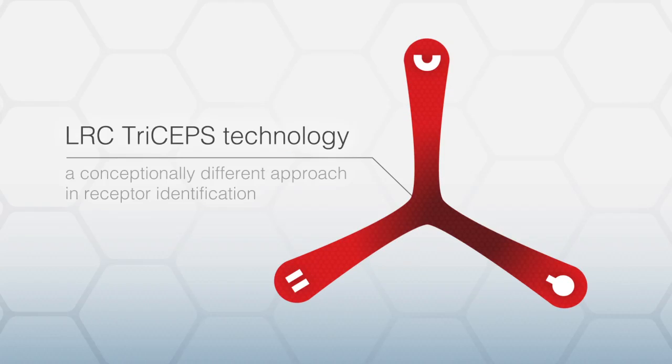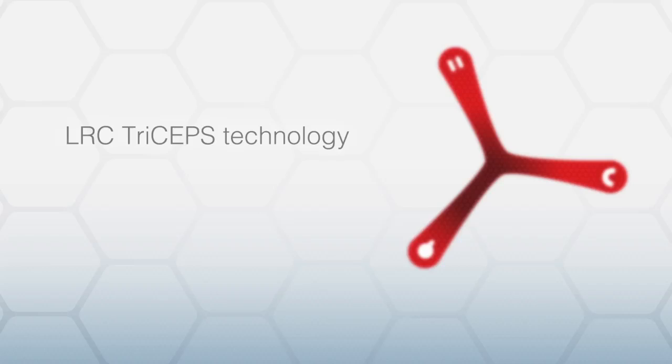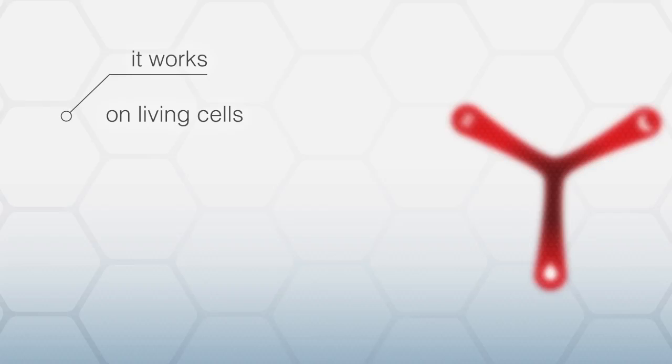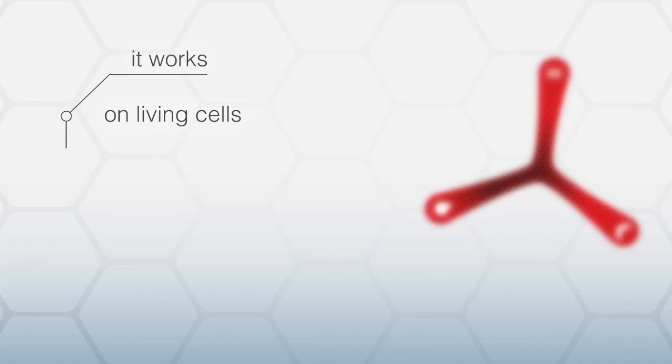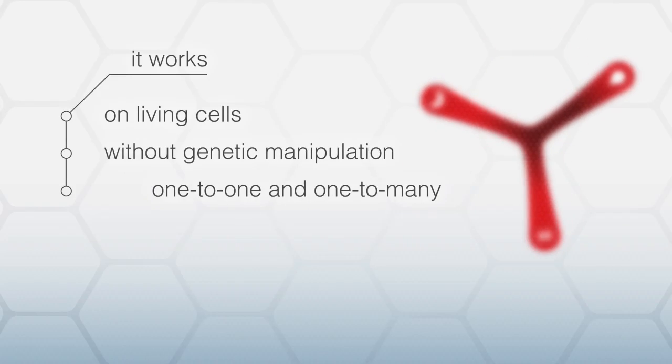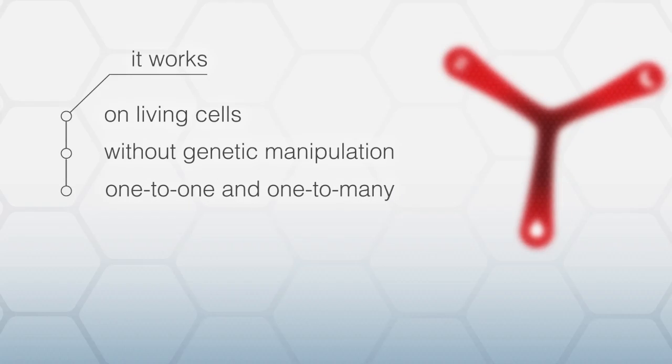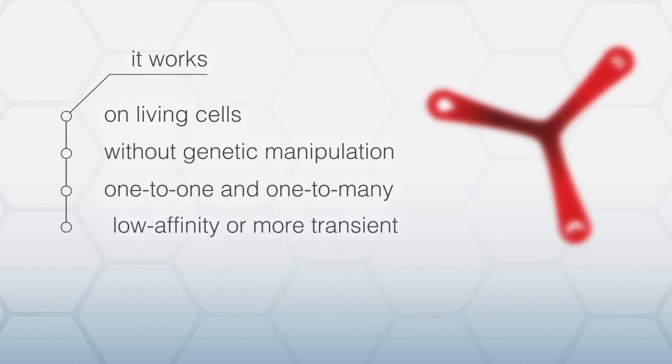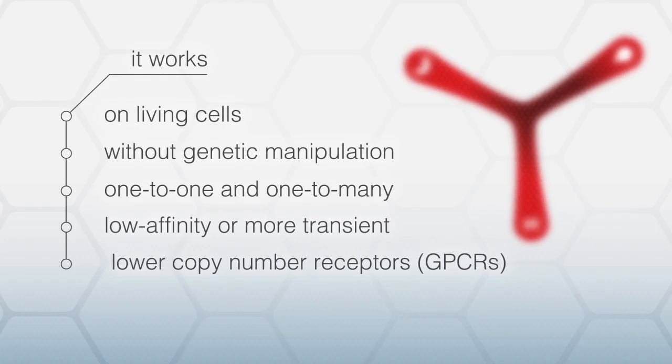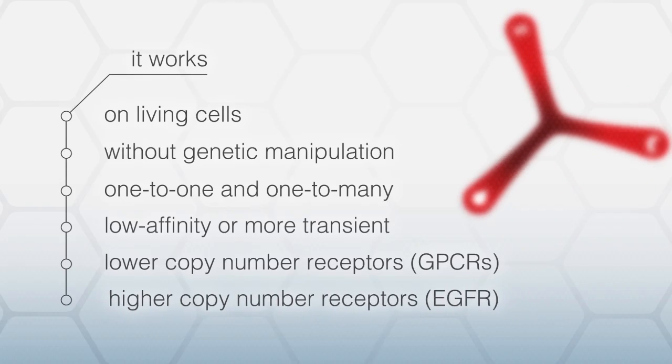LRC triceps is the most advanced method for identifying receptors of orphan ligands. Here's why: It works on living cells in an unbiased and hypothesis-free fashion. It works without genetic manipulation on cell lines and primary cells. It works for one ligand to one receptor and for one ligand to many receptor interactions. It works for low affinity or more transient interactions. And it works for lower copy number of receptors such as GPCRs and higher copy number of receptors such as EGFR.